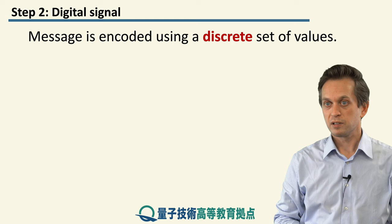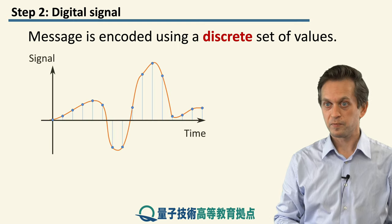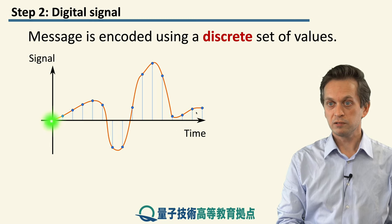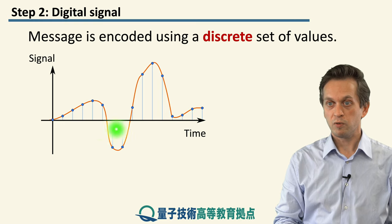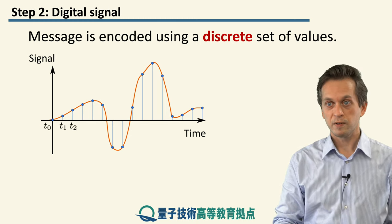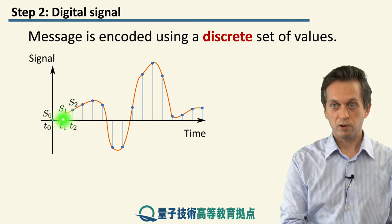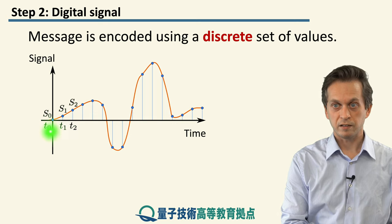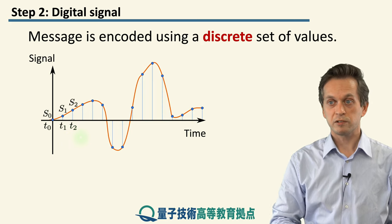How about digital signals? Digital signals are very different from analog signals in the sense that they only use a discrete set of values to represent and encode the message. So if we take our original analog signal — this orange line — and try to encode it digitally, what we would do is take the values of the signal at some discrete time steps: t0, t1, t2, and so on. At each time the signal has a different value, so we record s at t0 and call it s0, at t1 call it s1, and so on.